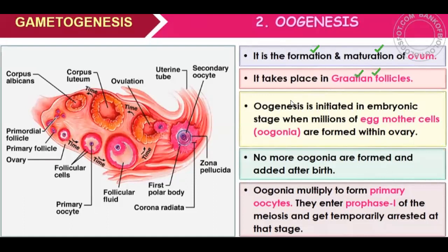Oogenesis is initiated in the embryonic stage, when millions of egg mother cells are formed within the ovary. In the ovary we have egg mother cells.